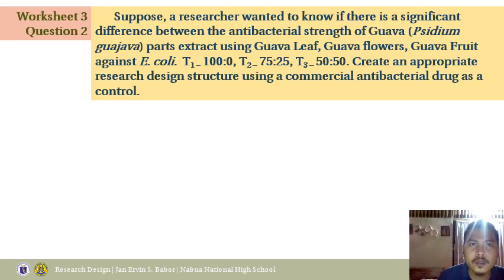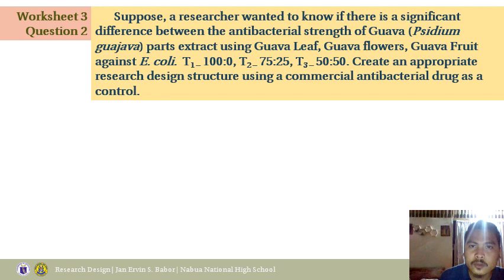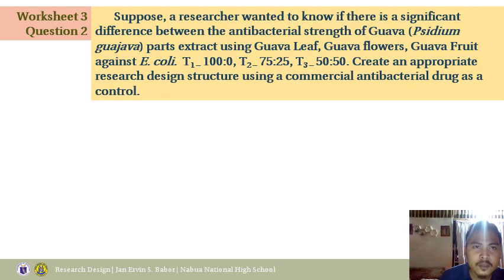Suppose a researcher wanted to know if there is a significant difference between the antibacterial strength of guava parts extract — using guava leaf, guava flowers, and guava fruit — against E. coli. You are given three treatments: T1 at 100%, T2 at 75:25, and T3 at 50:50. These are the concentrations. The type of research design to use in this case is CRD.